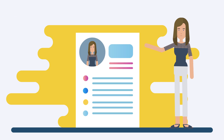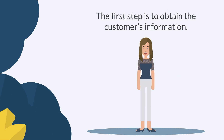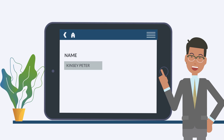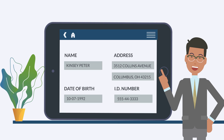How can you make sure the customer submitting application information is truly who they say they are? The first step is to obtain the customer's information: Name — be sure to include the customer's full legal name. Address — include the customer's residential street address, not a P.O. box. Date of birth. Identification number, social security number, or tax identification number.